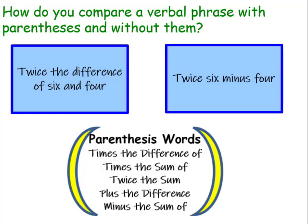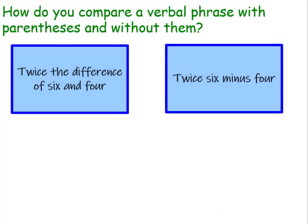In our first example, 'twice the difference' — we know that twice means two, and we're going to multiply the difference. The difference of what? Six minus four. So this is twice the difference of six and four. In the second example, it simply says 'twice six,' so we're doubling six and then subtracting four.